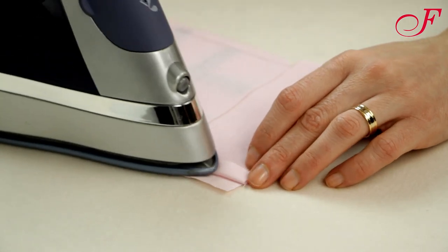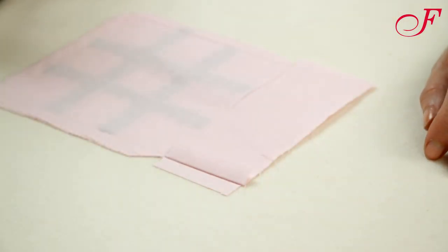Then fold the seam allowances of the future casing to the wrong side and press.